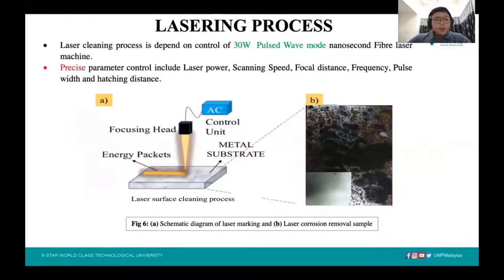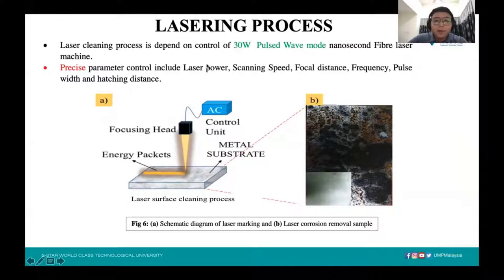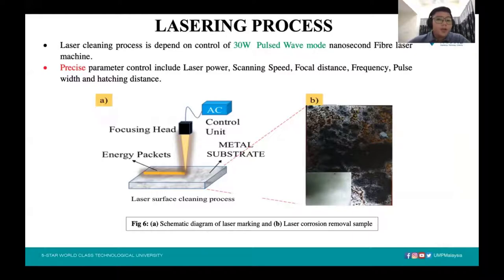For the lasering process, we have been using a 30-watt pulse wave nanosecond fiber laser machine to conduct our experiments. To conduct the experiment, we need to precisely adjust parameters such as laser power, scanning speed, focal distance, frequency, pulse width, and hatching distance. Some of these parameters will be fixed, and through adjustment of the others, the lasering process is conducted.